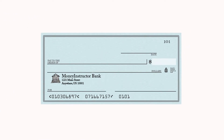Let's say you have to write a check worth $9.25. There are two main steps to follow. First, use numbers to write the amount. Enter the numeric amount in the dollar box located on the right-hand side of your check, next to the dollar sign. This will include the dollar amount 9, followed by a decimal point. Next, write the cents: 25.